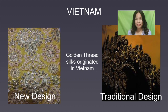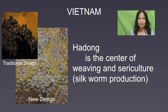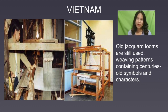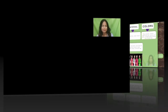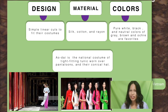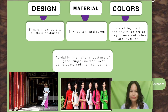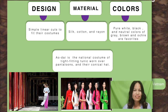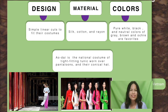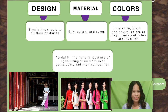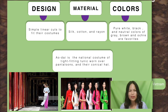Golden shirt silk originated in Vietnam. They have both new and traditional designs — both are adorable and the design is intricate. The old chunk-worn looms are still used today, with weaving patterns containing centuries-old symbols. Another creation from Vietnam is their Ao Dai, their national costume. It is a tight-fitting tunic worn over pantaloons and their conical hat. The design is a simple linear cut to fit their costume. The material is either silk, cotton, or other colors — pure white, black, and neutral colors of gray, brown, and ochre are favorites.